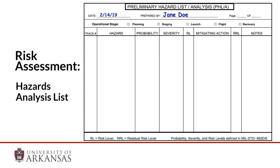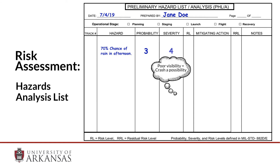One helpful way to perform a risk assessment is to list all the potential hazards, then estimate the probability that a hazard or risk could occur, and the consequences or the severity of that event. Then develop possible mitigating actions. You do this over and over and rescore until the risk is acceptable.